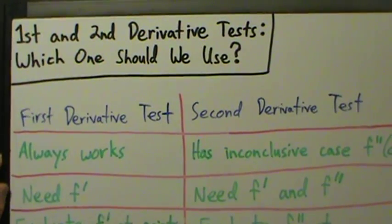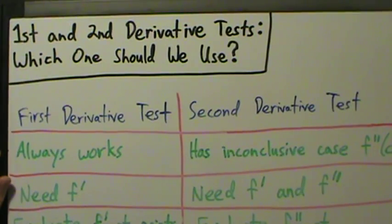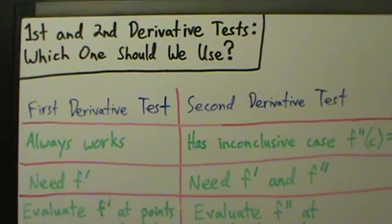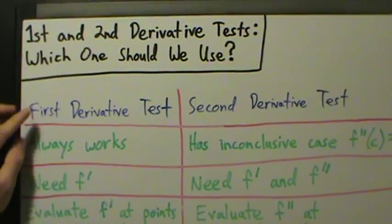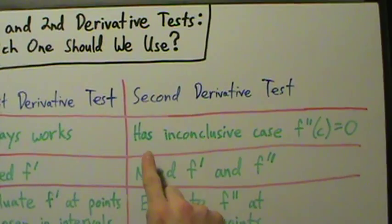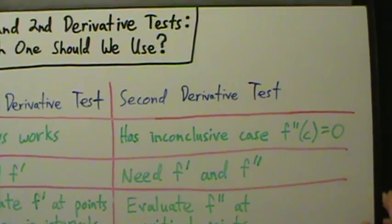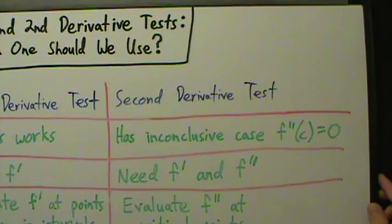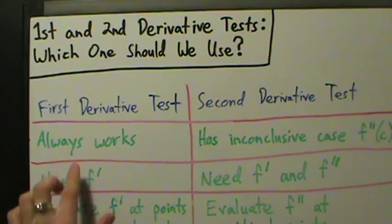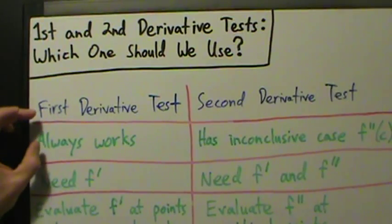But if it's up to you, one of these might be better than the other. Unfortunately, it's not really easy to tell which one's better until you start working through the problem. What's nice about the first derivative test is it always works. But the second derivative test has that inconclusive case — if the second derivative is zero, there could be a min, a max, or neither at that point x equals c. The first derivative test doesn't have any inconclusive case like that, so that's a huge advantage for the first derivative test.